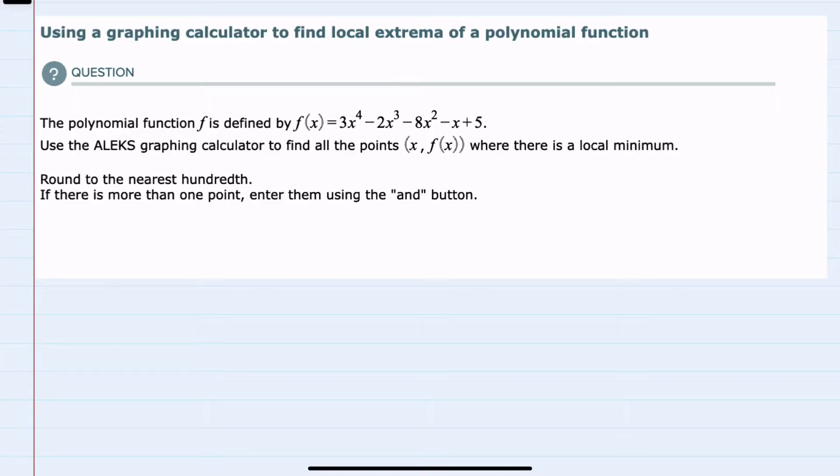In this video I'll be helping you with the ALEKS problem type called using a graphing calculator to find local extrema of a polynomial function. We're given the function f(x) and we're asked to use the ALEKS graphing calculator to find the coordinates (x, y) where we have a local minimum.